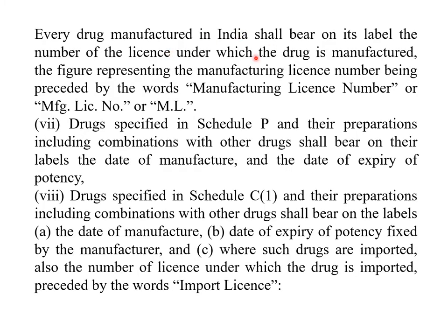Every drug manufactured in India shall bear on its label the number of the license under which the drug is manufactured. The figure representing the manufacturing license number is preceded by the words either 'Manufacturing License Number' in full form, or 'MFGLICNO', or simply 'ML'.